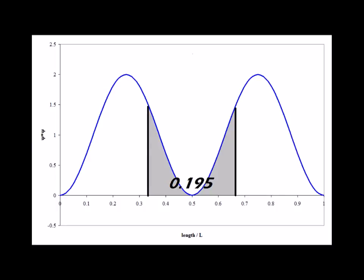If we integrate for n equals 2 between L over 3 and 2L over 3, the area under the curve has dropped to 0.195.